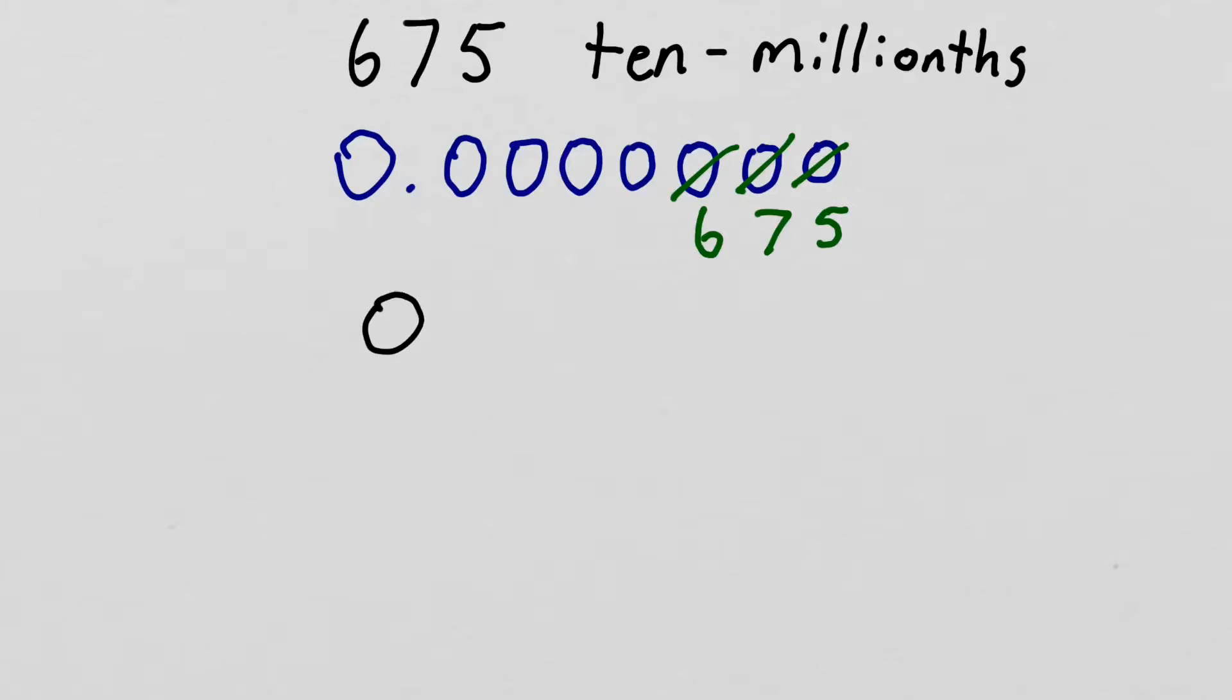So I get my zero point tens, hundreds, thousands, ten-thousandths, 675. So this is 675 ten-millionths written as a decimal.